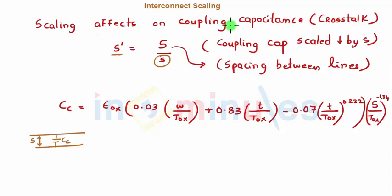s' scaling effects on coupling capacitance is what we are trying to see. Why? Because from that we can predict what will happen in crosstalk.